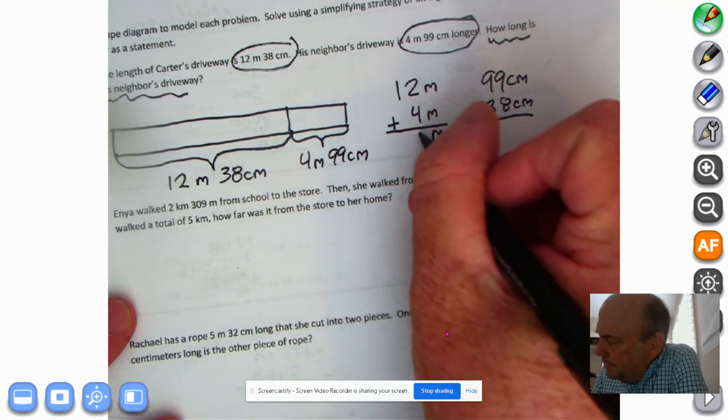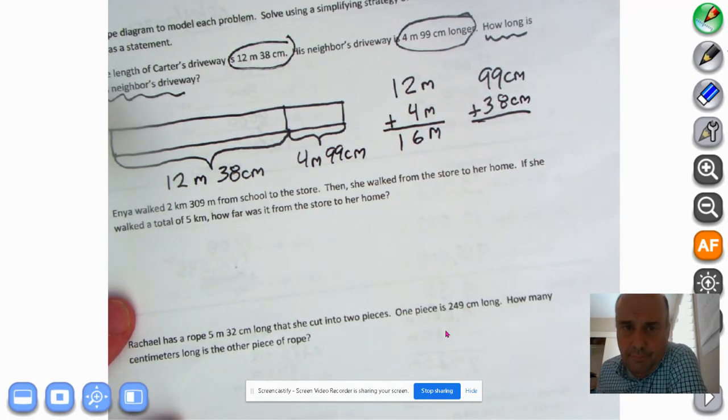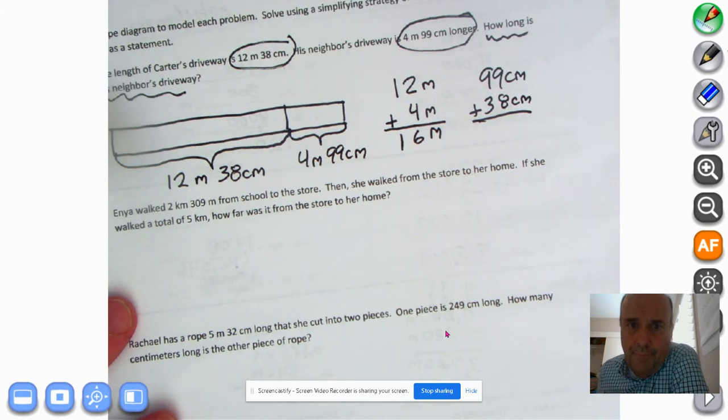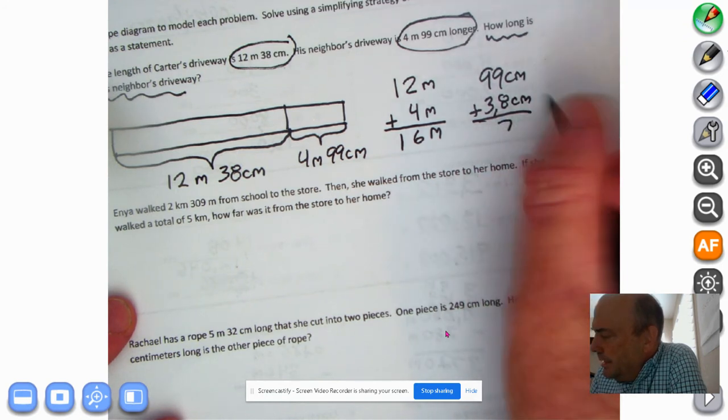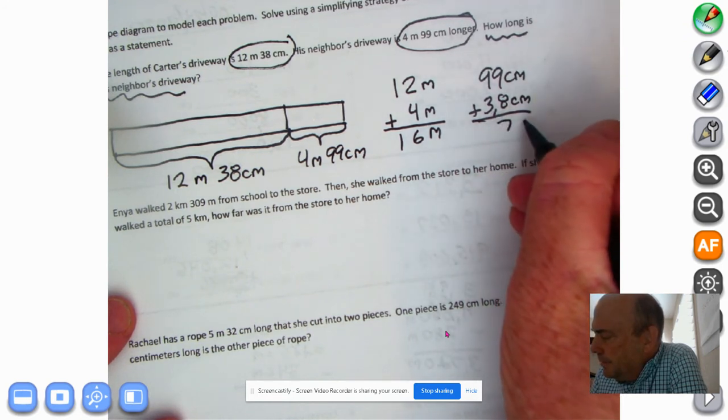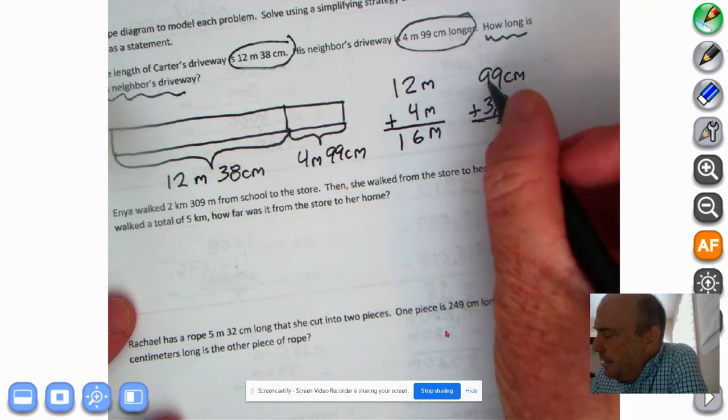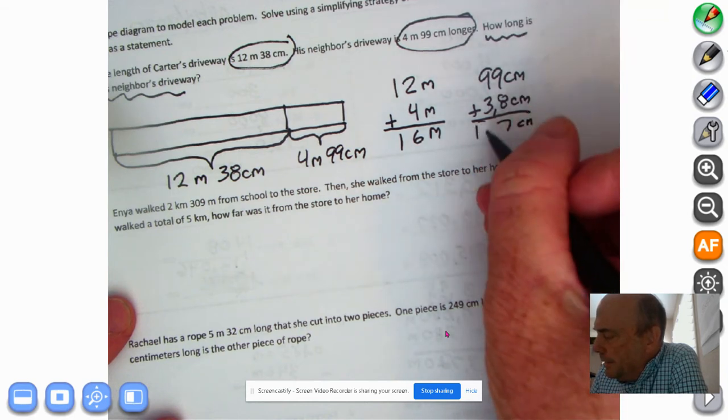2 plus 4 is 6. Bring down the 1. 16 meters. Now we've got to add the centimeters. Well, 9 plus 8 is 17. That's our 10. That's our 7. Whoops, we've got centimeters. Then we have 9 plus 1 is 10 plus 3 is 13. 130 centimeters.